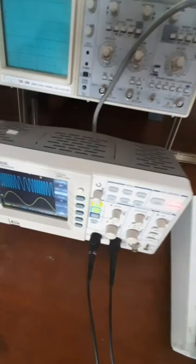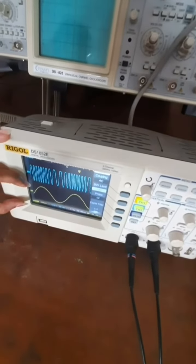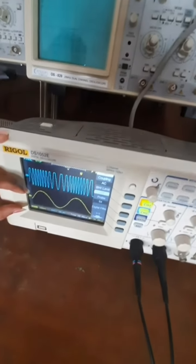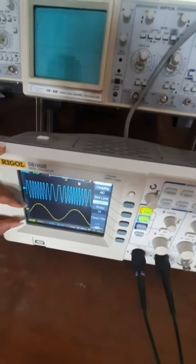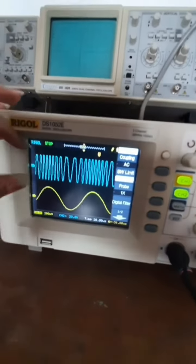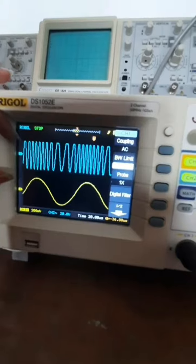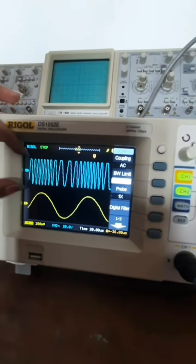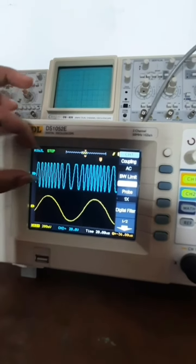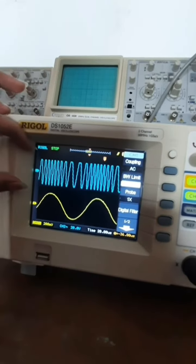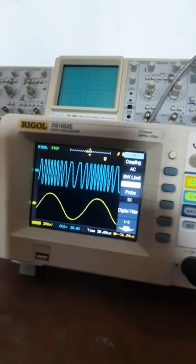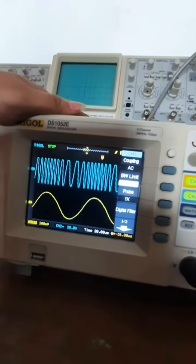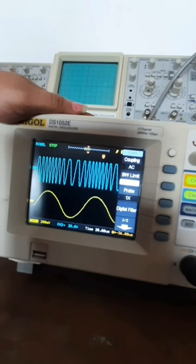The waveform of FM demodulator output is the original message signal indicated in yellow color, which is recovered from the FM modulated signal shown above indicated in blue color. So we can conclude that in this experiment we have studied and observed the waveform of FM demodulation using FM modulation and demodulation trainer kit.